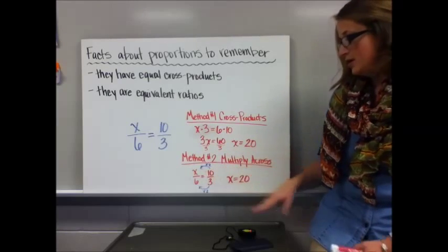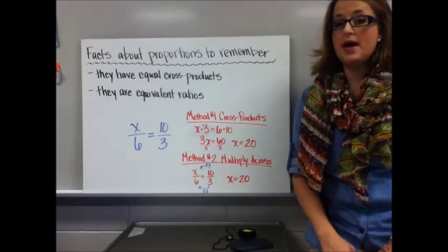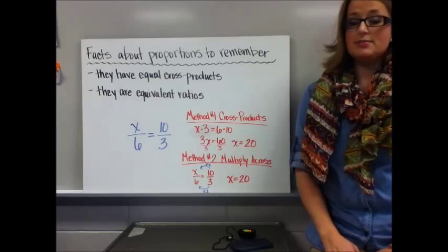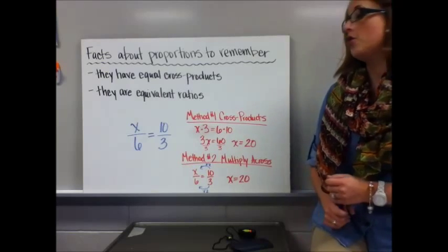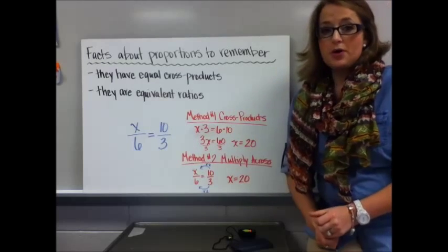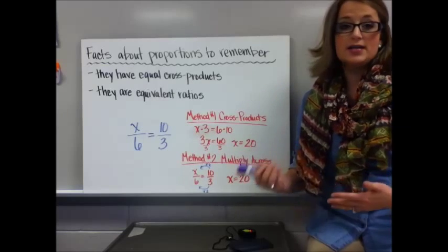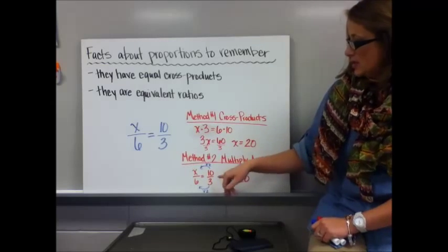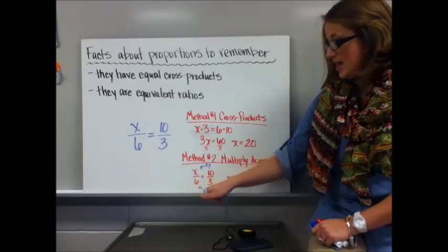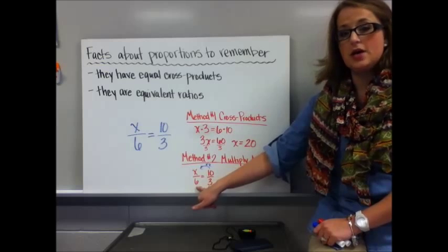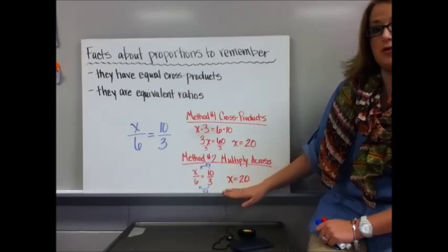The second method is multiplying across. When you're dealing with whole numbers this tends to be an easier method, but sometimes there are decimals or no whole number multiplier — especially when expressions like x minus 1 or x squared are involved. Looking at this proportion, I noticed that to go from 3 to 6 you multiply by 2, so 10 times 2 is 20.